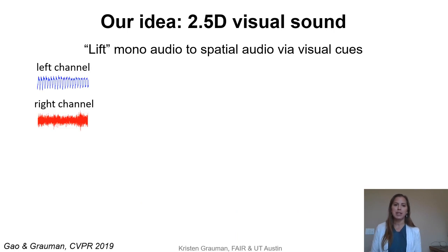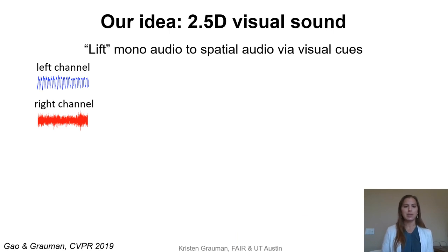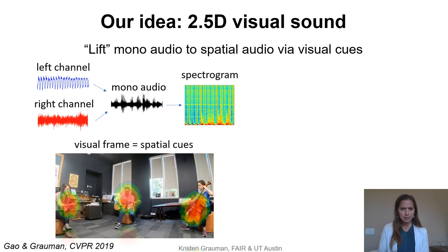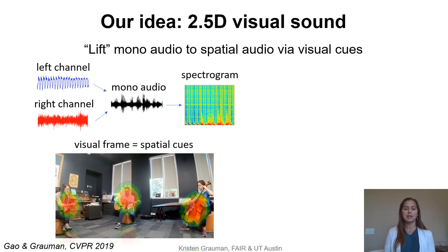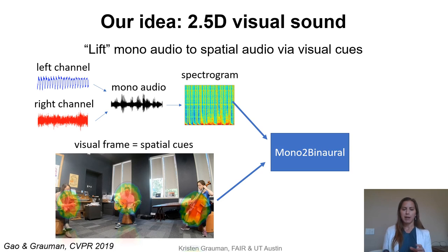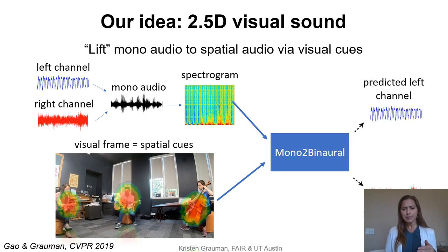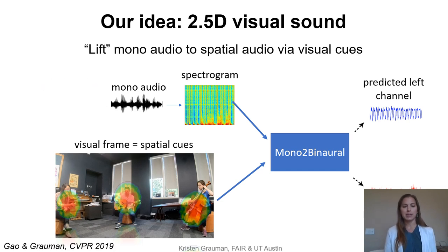Let me sketch out the approach for two-and-a-half-D visual sound. During training we have binaural sound captured with a rig, and we can artificially collapse that to mono audio and extract a spectrogram capturing the frequencies of the sound over time. Meanwhile in the visual stream we have the visual frame showing the different sound makers. The heart of this approach is a network that converts from mono to binaural sound, trained on these two streams — mono audio and visual — such that at test time we can still perform this lifting to multi-channel audio.